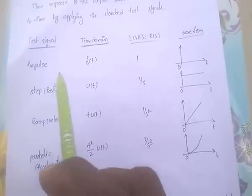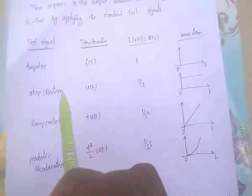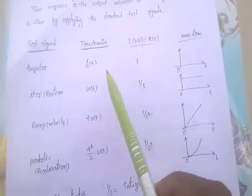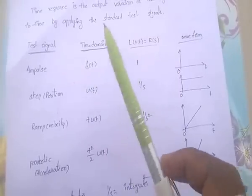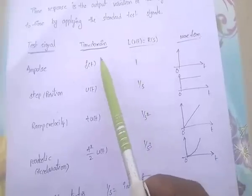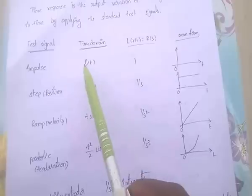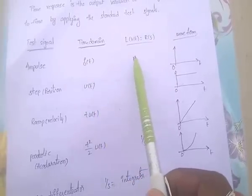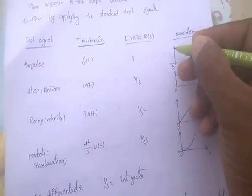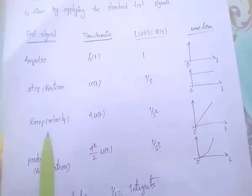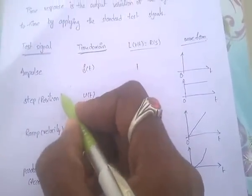First, the impulse signal. For the impulse signal, it is denoted by delta of t, and in the s-domain, the Laplace transform of the input r(t) is R(s), that is, the Laplace transform of delta(t) equals 1. This is the impulse waveform.